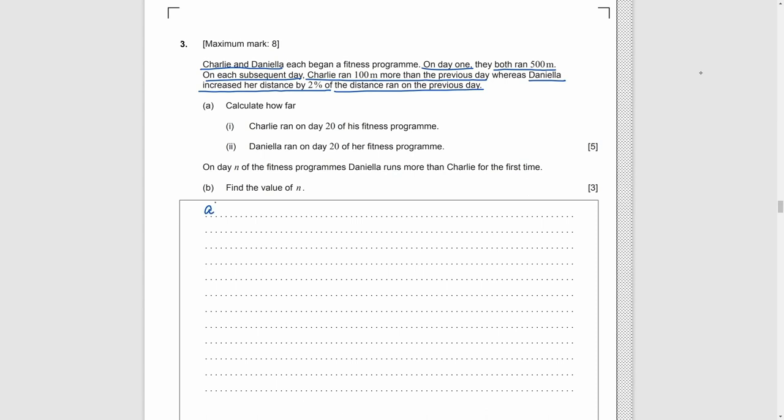Part A. We need to find the total distance C and D ran on day 20. For C, by the formula of AS, we have UN equals U1 plus N minus 1 times the difference. By substitution, we have 500 plus 19 times 100, which is 2400. And for D, by the formula of GS, we have UN equals U1 times bracket 1 plus 2% to the power 19, which is 728.